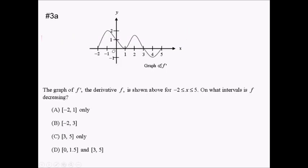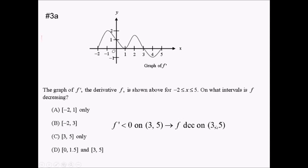For this problem, we are given the graph of f prime, the derivative of f, between negative two and five, and we want to know on what intervals f is decreasing. If f is decreasing, it has a negative f prime. Looking at our graph, f prime is negative between three and five. This tells us that f is decreasing on the interval from three to five — answer choice C. You could express this with or without brackets, and this is the only answer with three and five.